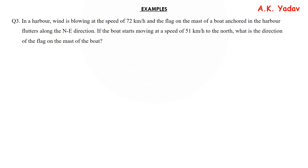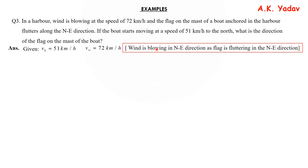Let's move to Question 3 — a very good question. In a harbour, wind is blowing at a speed of 72 km/h and the flag on the mast of a boat anchored in the harbour flutters along the north-east direction. If the boat starts moving at a speed of 51 km/h to the north, what is the direction of the flag on the mast of the boat? Given: velocity of boat = 51 km/h, velocity of wind = 72 km/h, and the wind is blowing in the north-east direction as the flag is fluttering in the north-east direction.